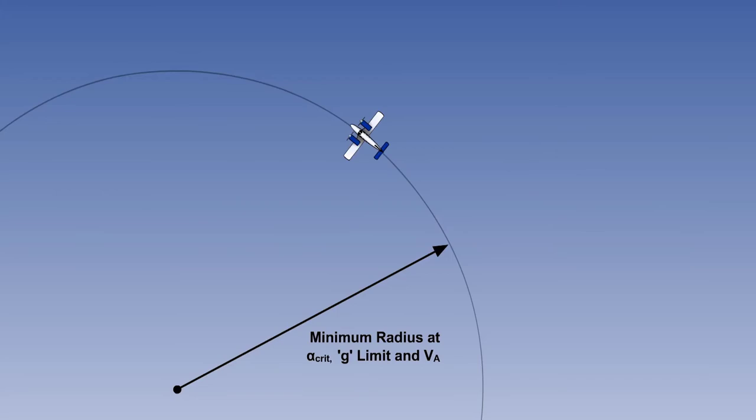If the thrust available is adequate, the minimum radius of turn occurs at the intersection of the stall limit and the strength or load limit. The speed at this point is VA, the maximum manoeuvring speed.